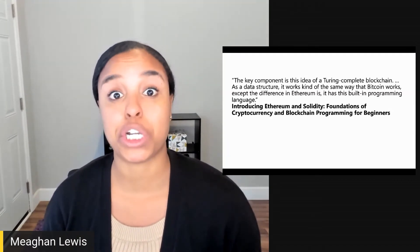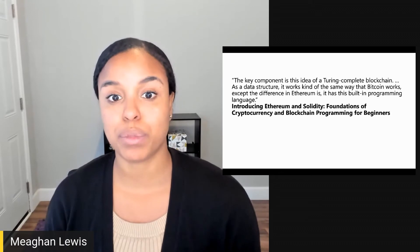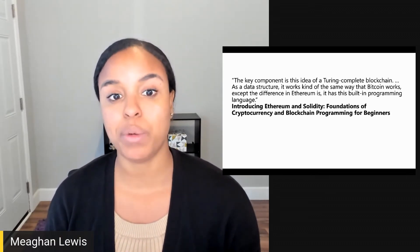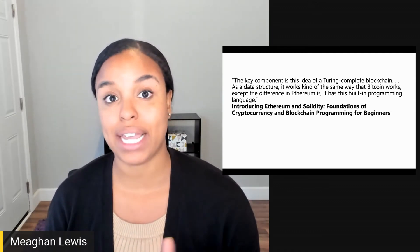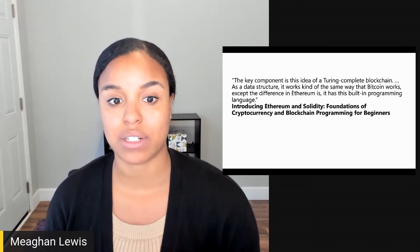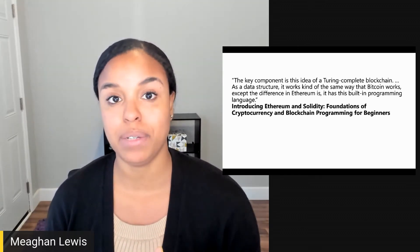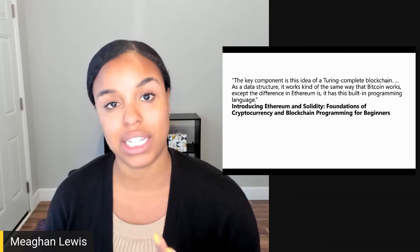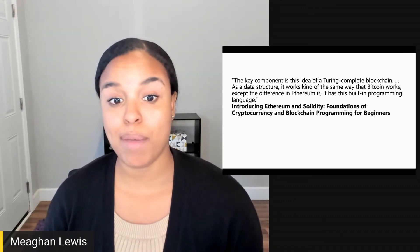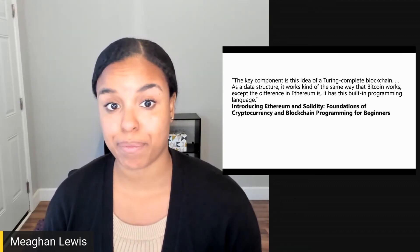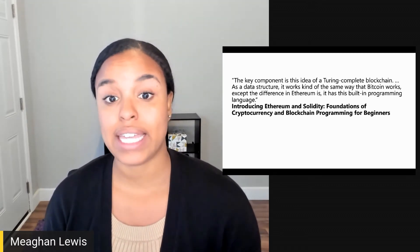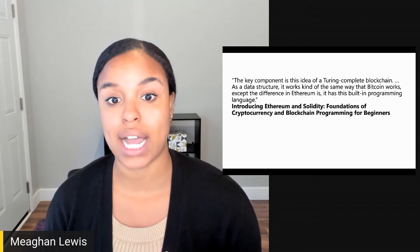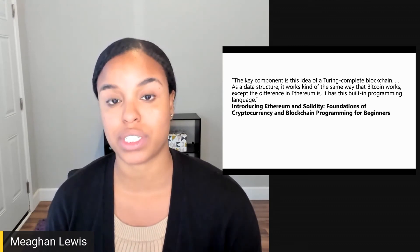Ethereum is also Turing-complete, which means that a program is sufficiently expressive and will have predictable behaviors. It also indicates that anything can be calculated, providing there is enough time and computing power. The part of the protocol that handles processing is called the Ethereum Virtual Machine, or the EVM for short. The EVM is a Turing-complete virtual machine. Ethereum also uses an expressive language called Solidity, which allows programmable smart contracts versus simple currency transfers allowed with Bitcoin.